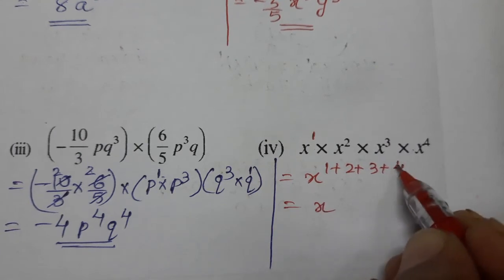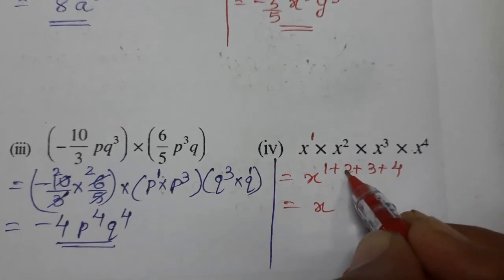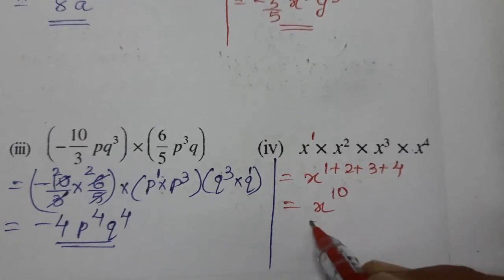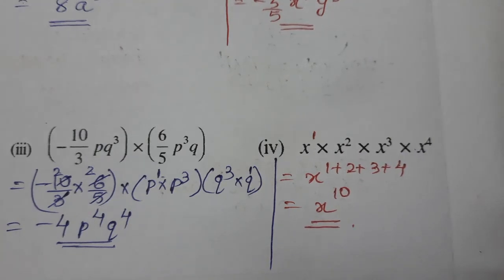So what we get: 1 plus 2 is 3, plus 3 is 6, plus 4 is 10. So x raised to 10 is the answer. So I hope you understood question number 3. Thank you so much for watching the video.